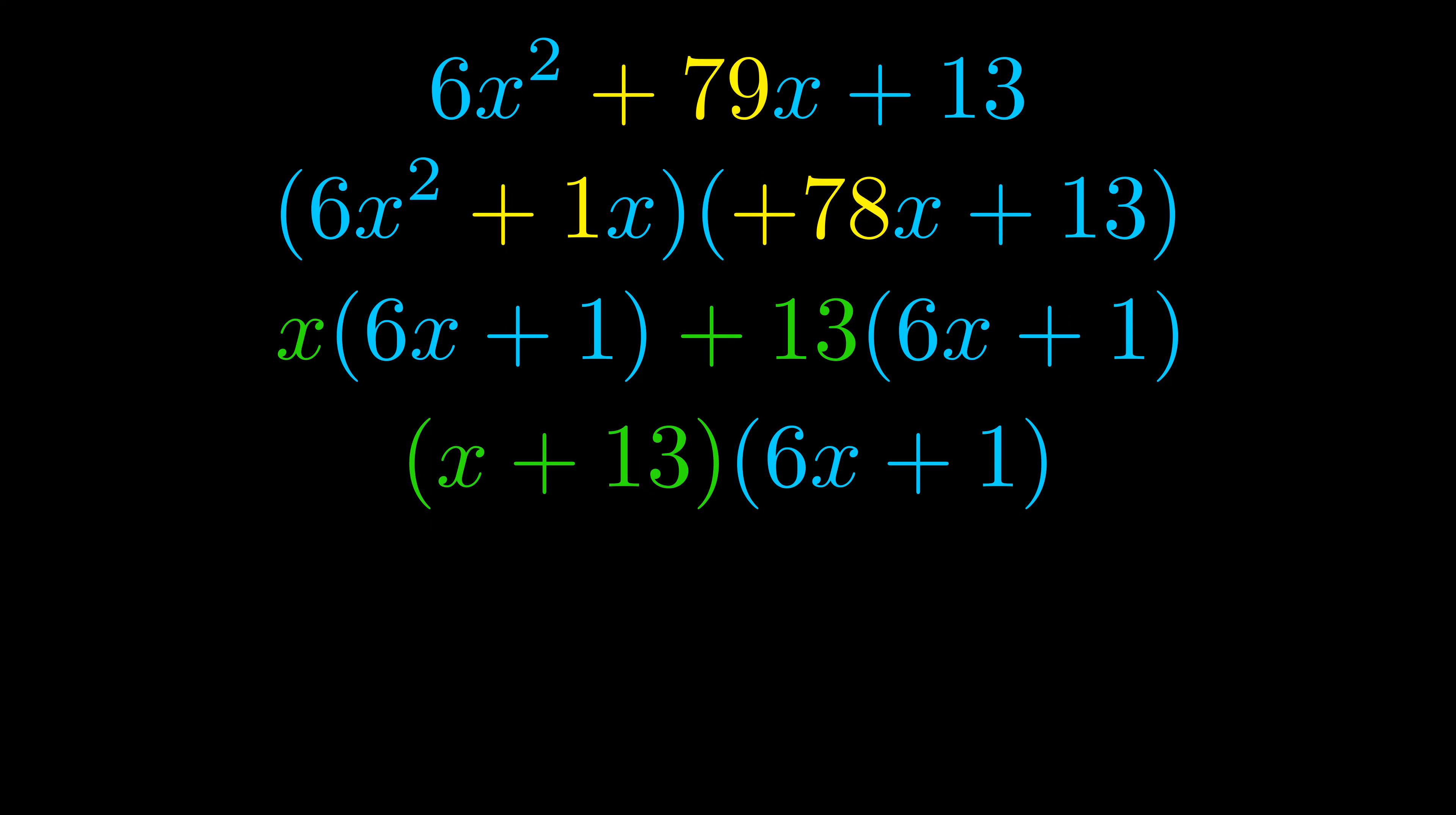Those blue values will become one of our factors, and we will combine the two green values—the GCFs that we pulled out—to get the other one. And that is our fully factored equation.